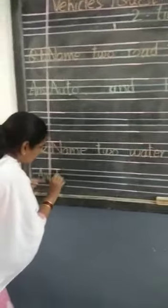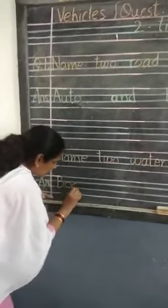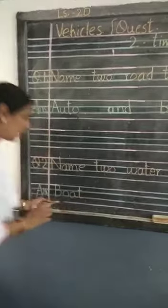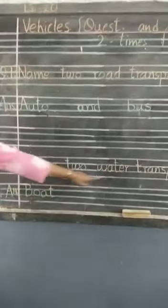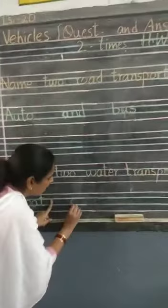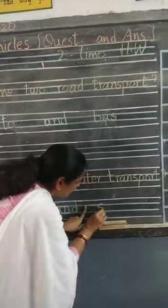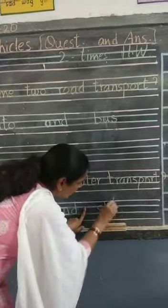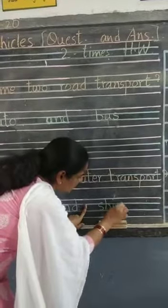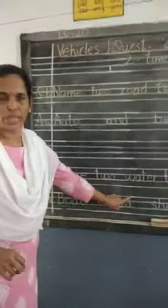A-N-S — Answer. We will write first capital B — Boat: B-O-A-T. You know that boat and ship move on water. Boat, finger space, A-N-D — and, finger space, S-H-I-P — Ship. These two vehicles, ship and boat, move on water. You all know that.